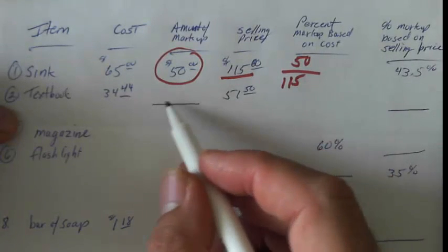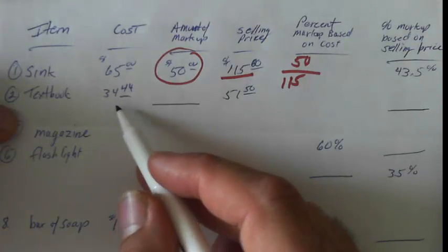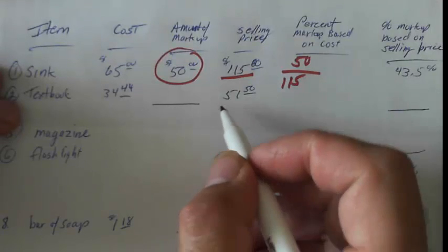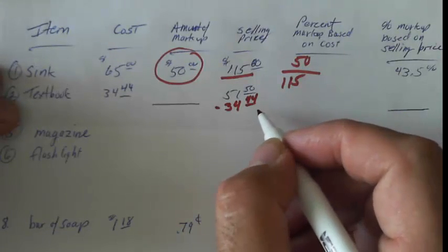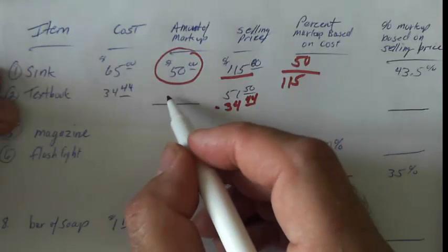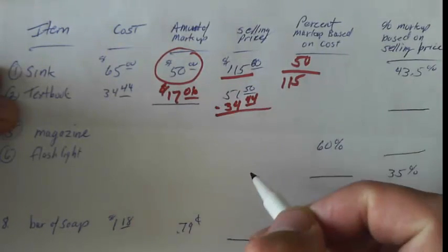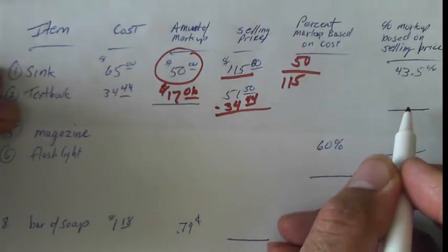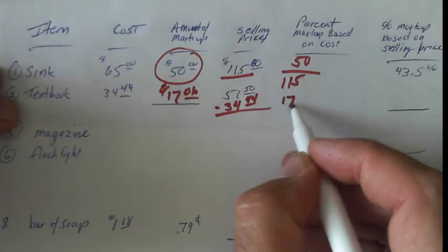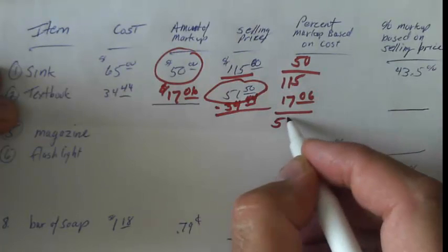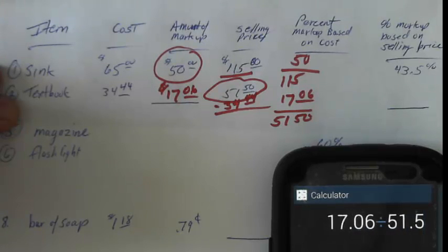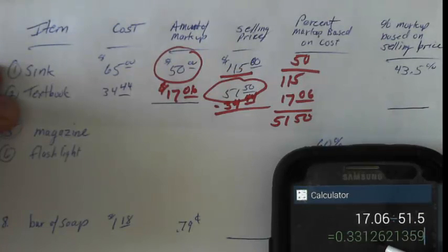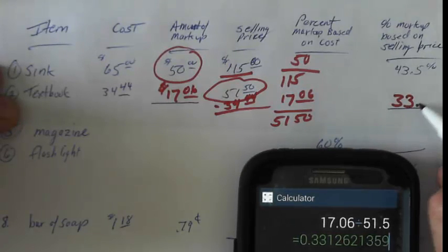Number 2 doesn't give us the amount of the markup — we have to determine it. They give us the cost of the item and the selling price, so we do a subtraction problem to get the markup. We subtract 34.44 and get a difference of $17.06. Now for the markup based on selling price: 17.06 divided by 51.50 gives 33.12, so that's 33.1% when we move the decimal over 2 spots.